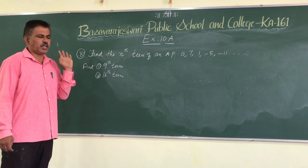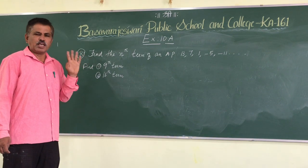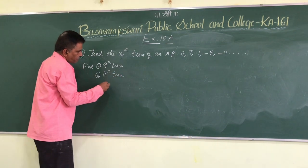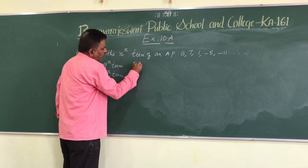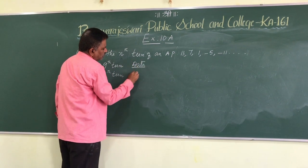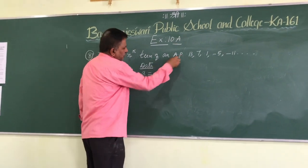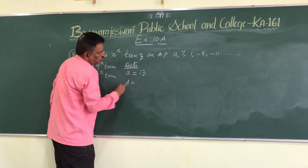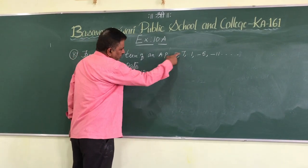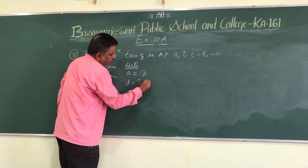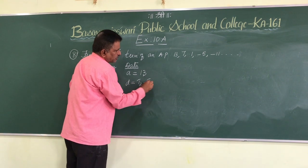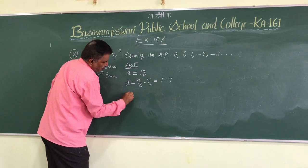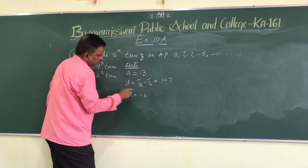So according to the data: A, the first term, is equal to 13. For the common difference D, take the third term minus the second term: 1 minus 7, so the common difference is minus 6.